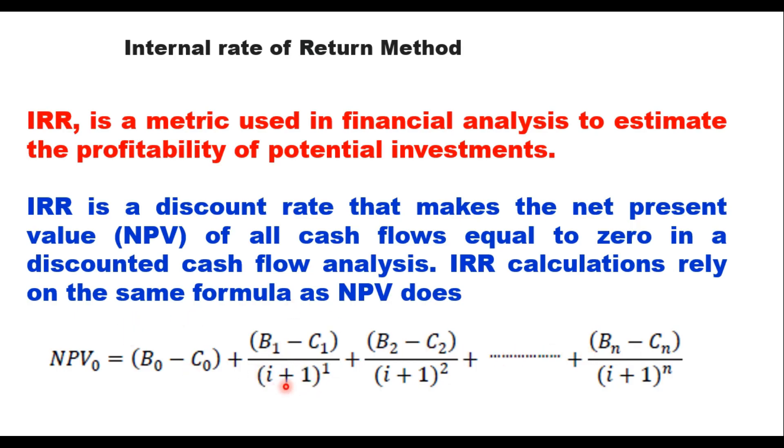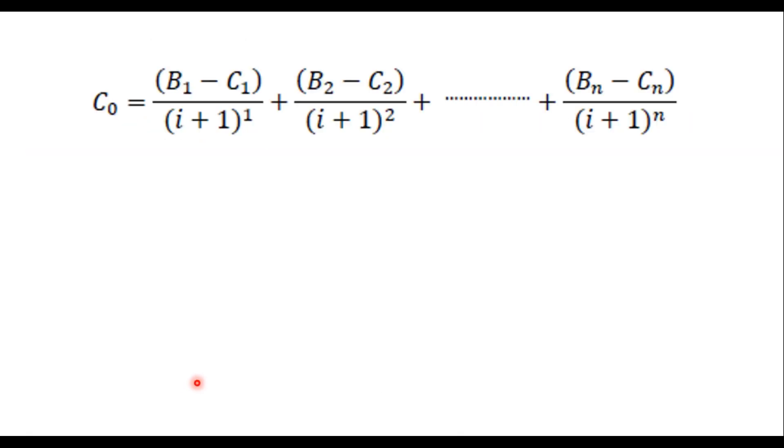Now here, i is to be estimated, i or r, so that this NPV becomes 0 and benefit becomes in the initial year benefits will be 0, only the cost. And therefore, this equation can be rewritten as C0 is equal to B1 minus C1 upon i plus 1 power 1, B2 minus C2 upon this and so on. So that is the equation for calculation of IRR. We need to know i.